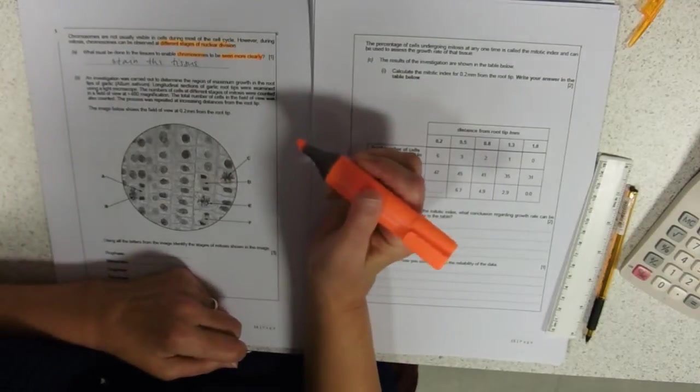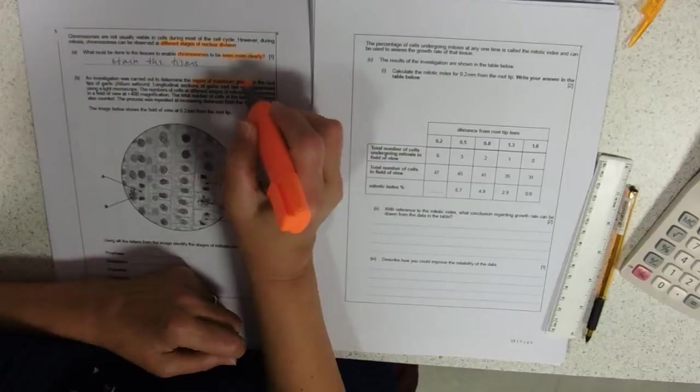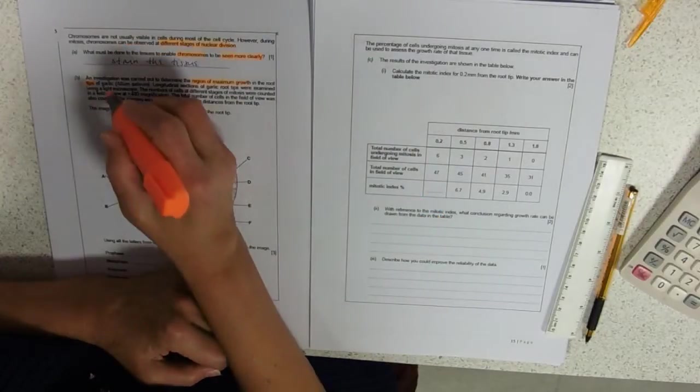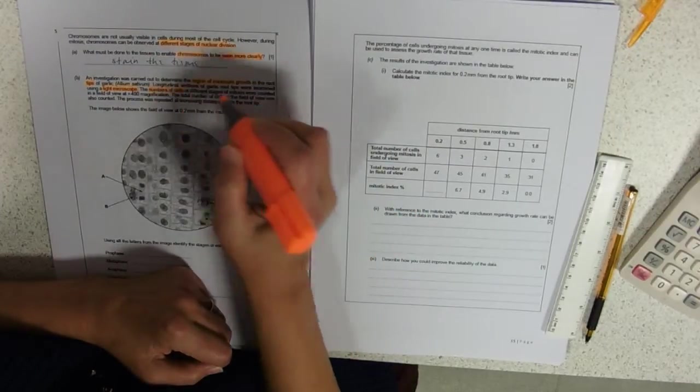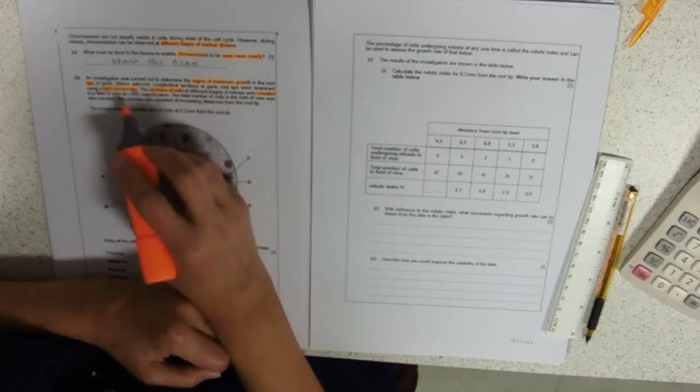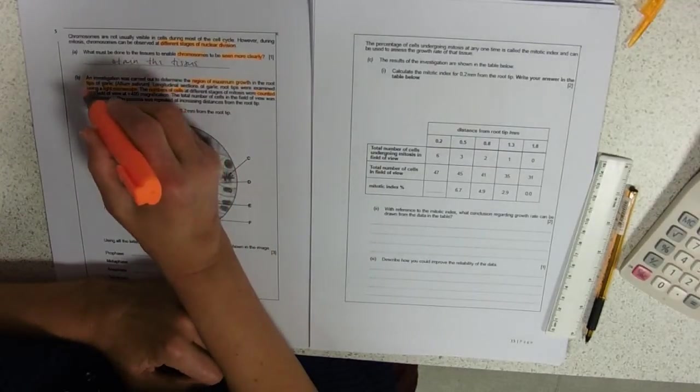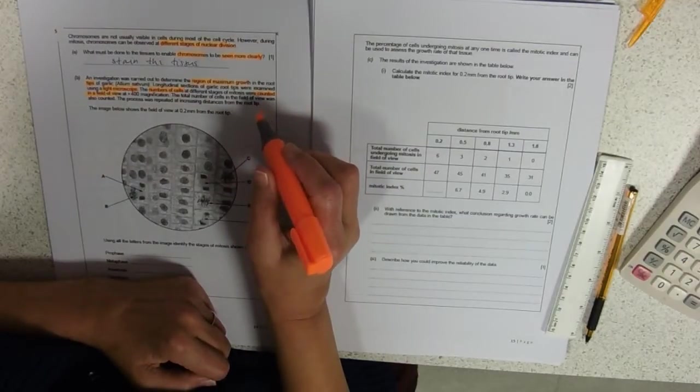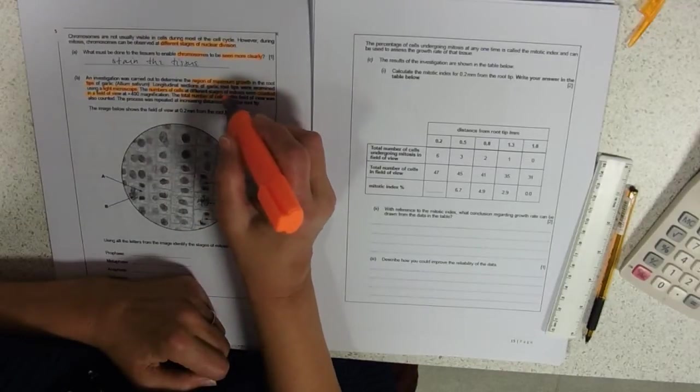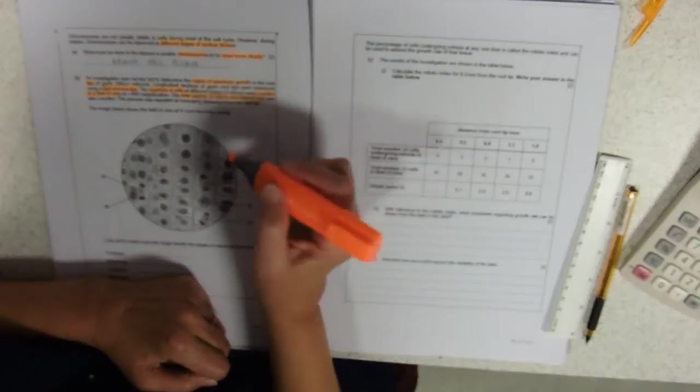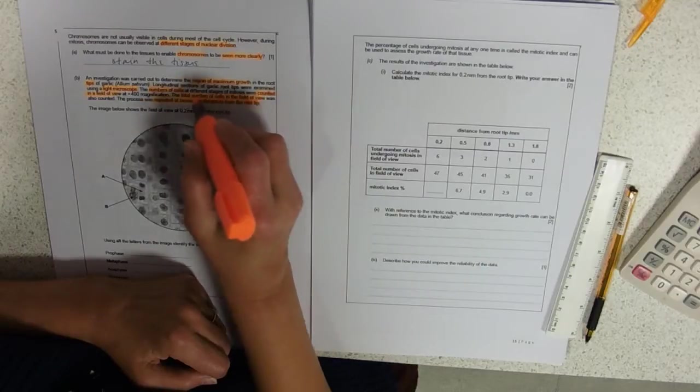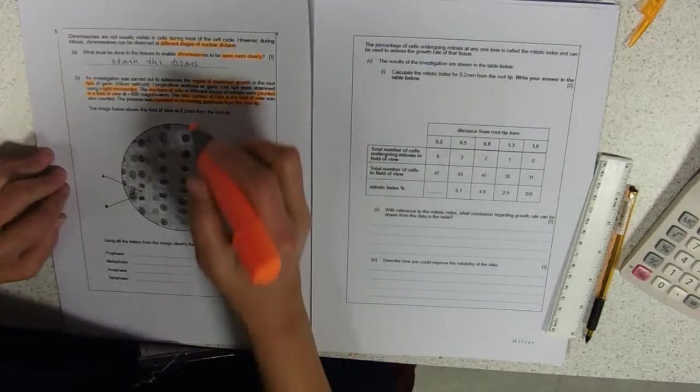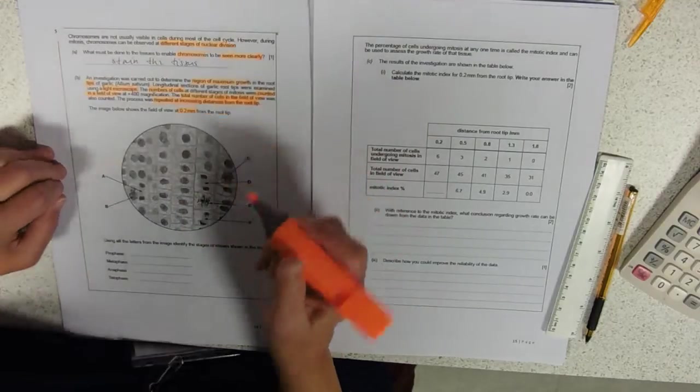So, an investigation was carried out to determine the region of maximum growth in the root tip. Longitudinal sections of garlic root tips were examined using a light microscope. Number of cells counted in a field of view. Total number of cells in the field of view was counted, and the process was repeated at increasing distances from the root tip. So that's our independent variable. Right at the root tip, 0.2mm from the root tip.